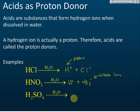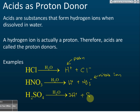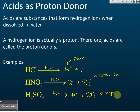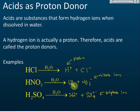For sulfuric acid, when dissolved in water it forms two hydrogen ions and sulfate ions. So from these examples we can see that when acids dissolve in water, they release hydrogen ions. These hydrogen ions are the protons, and that is why acid is called a proton donor.